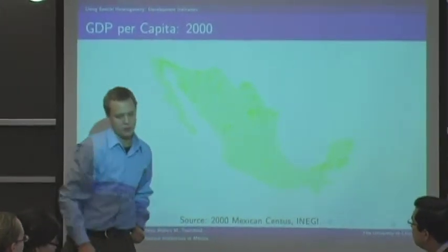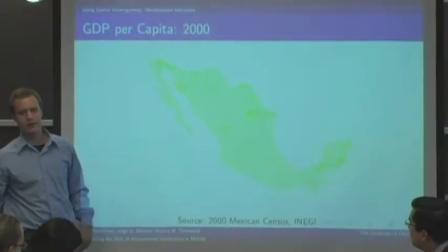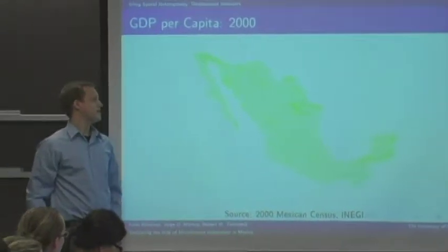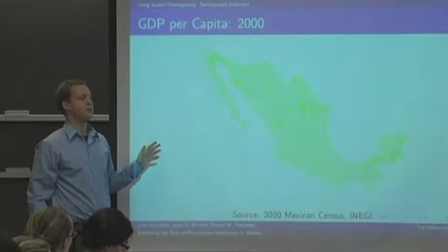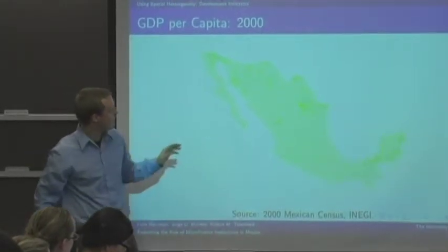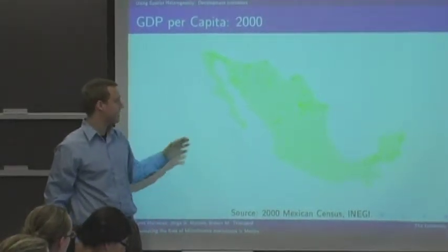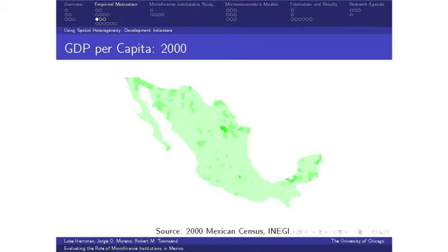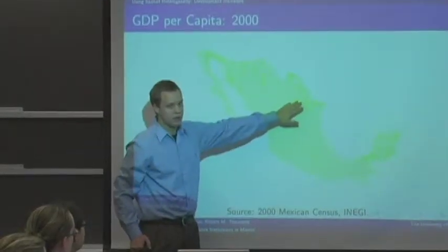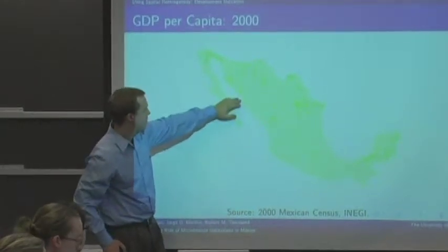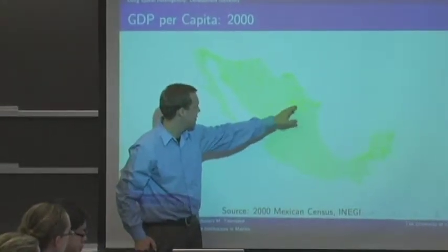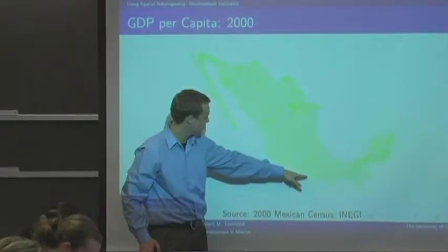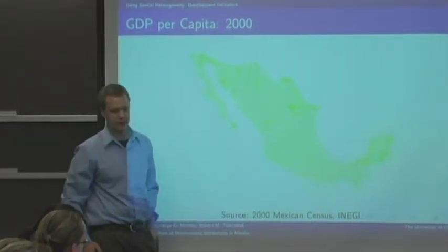Moving on to the spatial disaggregation of Mexico — Mexico is officially categorized as a middle-income country, but that hides a lot of regional disparities. There are areas with very high income and areas with very low income. Darker green here indicates higher GDP per capita for each of the municipalities or counties. It's generally higher along the U.S. border and in cities — Mexico City, Monterrey, and I think this is Acapulco — so generally slightly higher income in urban areas.